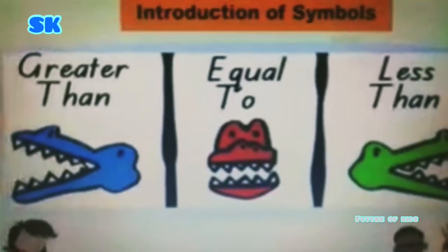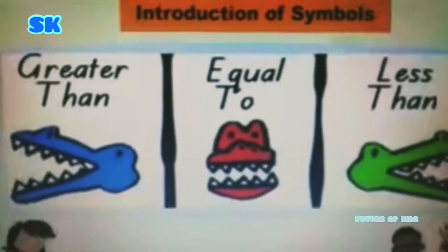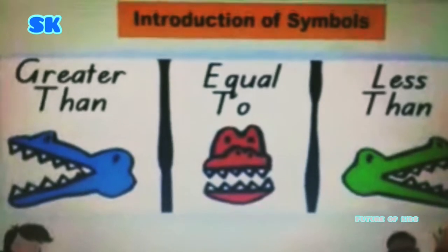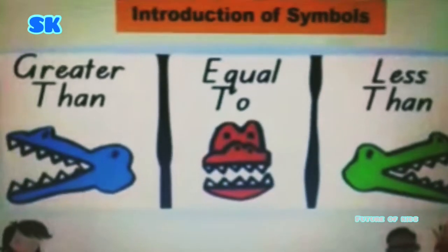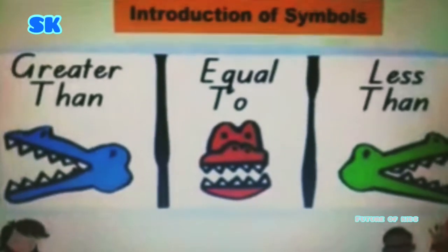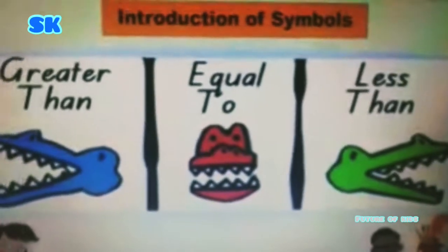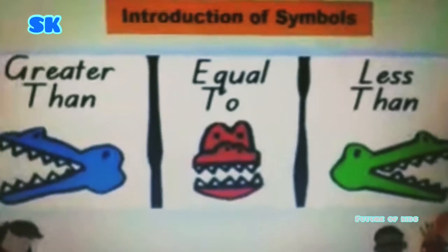Now I am going to introduce the symbols. The first symbol is greater than, the second symbol is equal to, and the last symbol is less than.